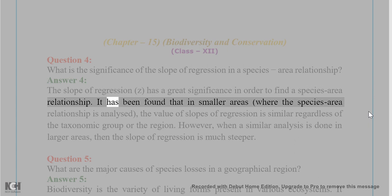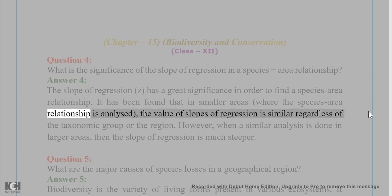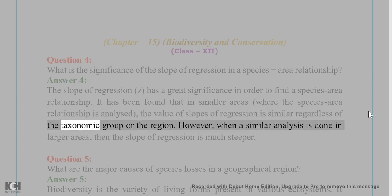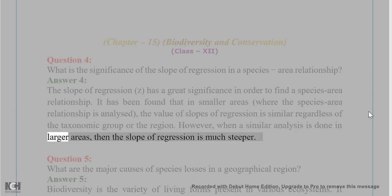It has been found that in smaller areas where the species-area relationship is analyzed, the value of the slope of regression is similar regardless of the taxonomic group or the region. However, when a similar analysis is done in larger areas, the slope of regression is much steeper.